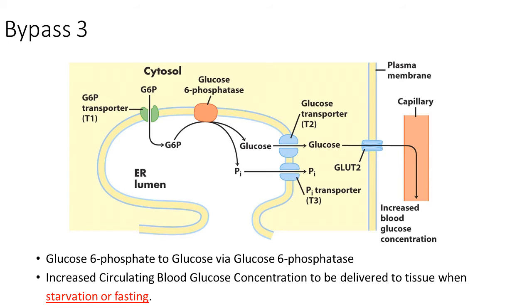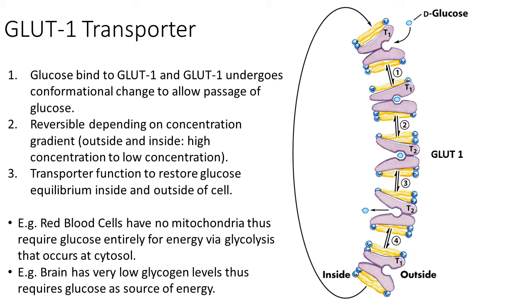This increases circulating blood glucose concentration to be delivered to the tissues during starvation or fasting. Glucose transporter 1, or GLUT1, undergoes a conformational change upon binding glucose to allow its passage. It is reversible depending on the concentration gradient, and functions to restore glucose equilibrium inside and outside the cell. GLUT1 is found in red blood cells and the brain, as these tissues rely heavily on glucose. Red blood cells have no mitochondria and require glucose entirely for energy via glycolysis in the cytosol. The brain, which has very low glycogen levels, also requires glucose as a source of energy.